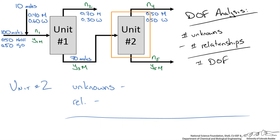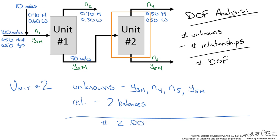A degree of freedom analysis around unit 2 gives unknowns Y3M, N4, N5, and Y5M — 4 unknowns. Again we can write 2 balances for 2 species. With 4 unknowns and 2 relationships we have 2 degrees of freedom. So unit 2 is also underspecified and we cannot start there.